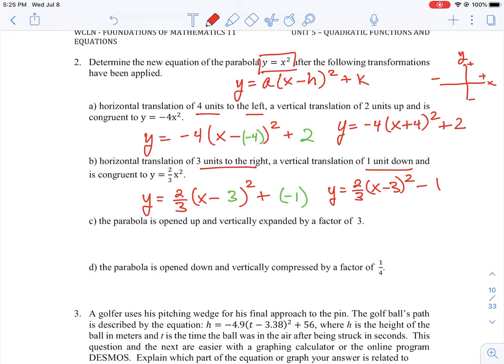And then let's look at question C. The parabola is opened up and vertically expanded by a factor of 3. So remember, vertically expanded is the opposite of being compressed. That means the a value is greater than 1. That will give us a vertically expanded or vertically stretched parabola. So we could just simply write this as plus 3x squared.